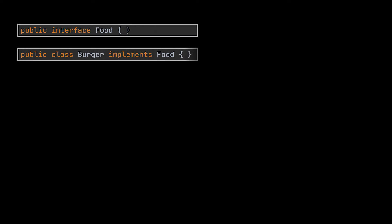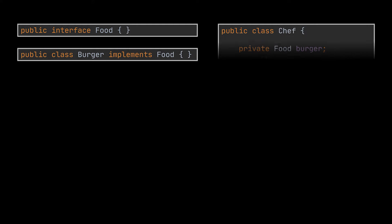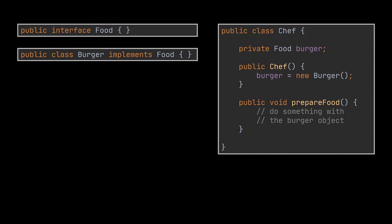So suppose we have this Food interface implemented by the Burger class, and these two are being used by the Chef class which has a single method called prepareFood. In this simple example we can notice that the Chef class is dependent on the Burger class, as without initializing it in the constructor the chef cannot prepare anything.